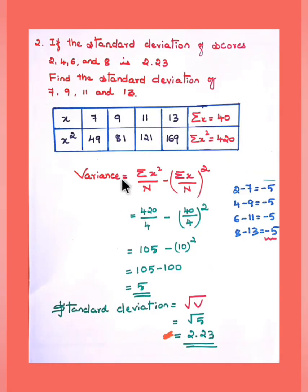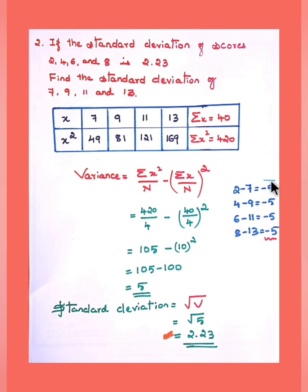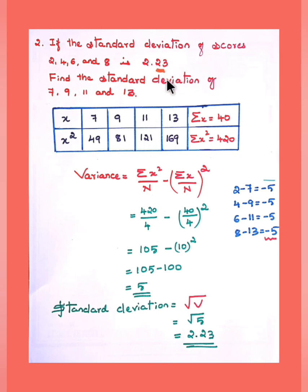There was a similar question in a previous 2015 HSTR question paper. Now let us look at this: if the standard deviation of scores 2, 4, 6, and 8 is 2.23, find the standard deviation of 7, 9, 11, and 13. When two sets of scores are given, check the common difference: 2 minus 7 equals minus 5, 4 minus 9 equals minus 5, and so on — all differences are the same. When the common difference is the same, the standard deviation remains the same.